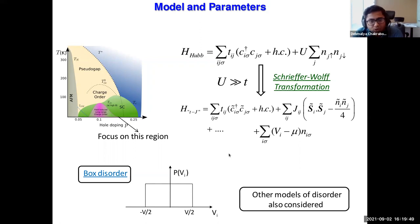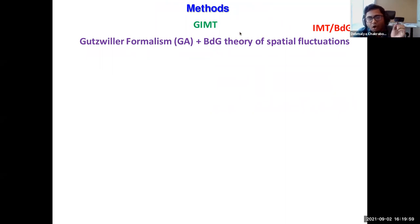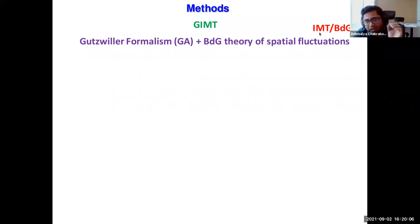The method we consider is an augmented framework of the Gutzwiller approximation and Bogoliubov-de Gennes (BdG) theory of spatial fluctuations. BdG theory takes care of inhomogeneous fluctuations of density — I will sometimes call it IMT (inhomogeneous mean-field theory) or just BdG.